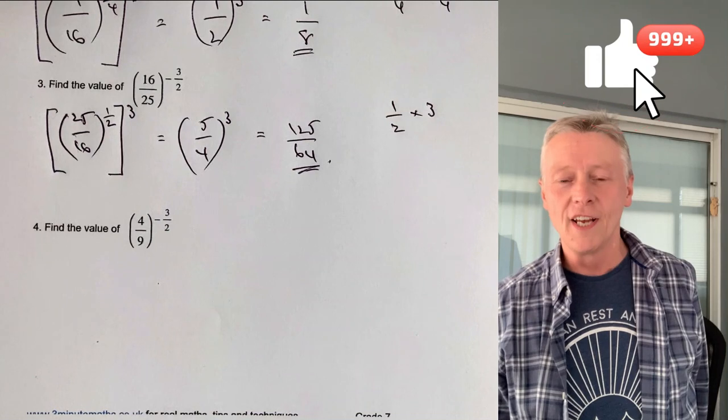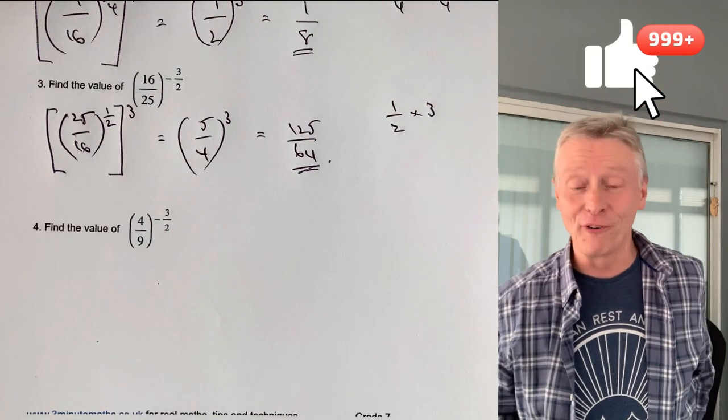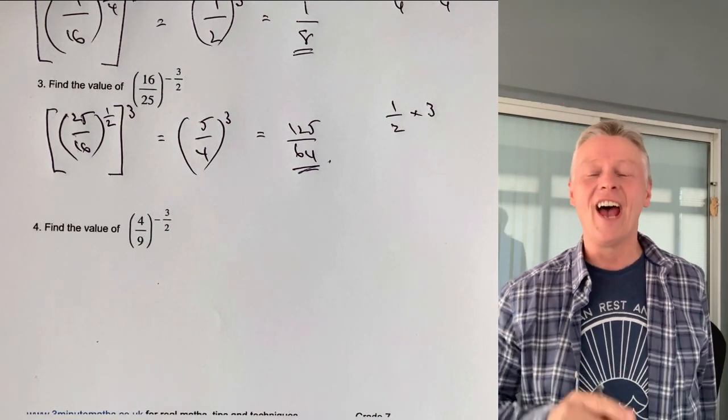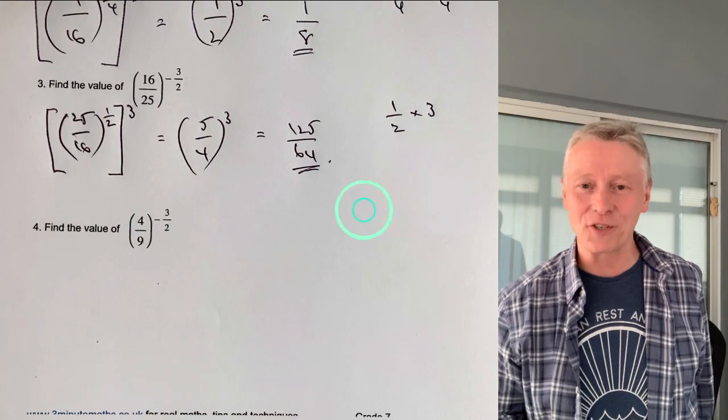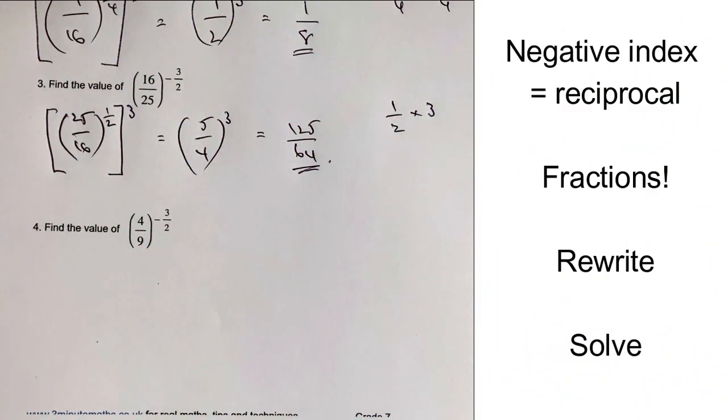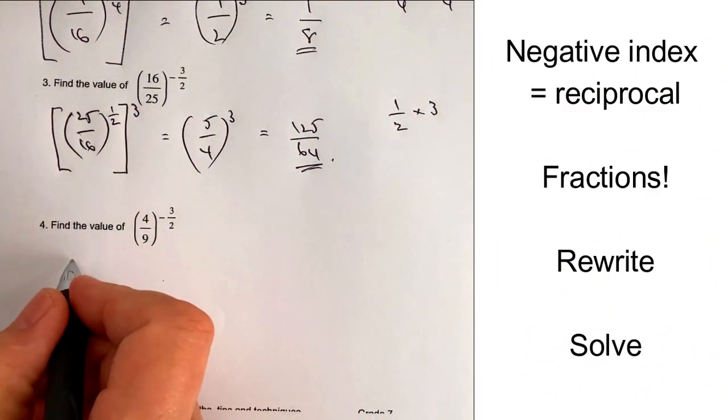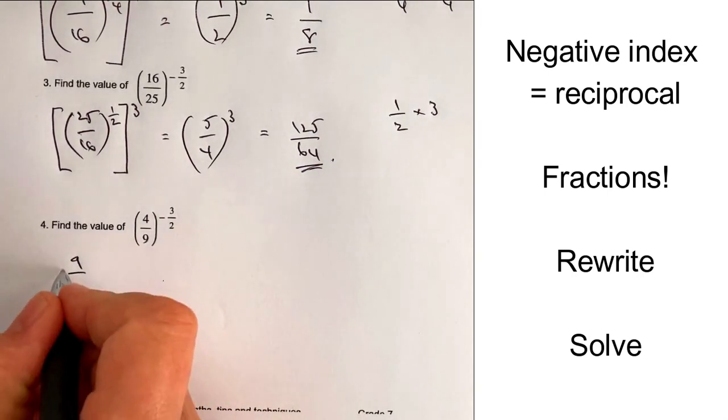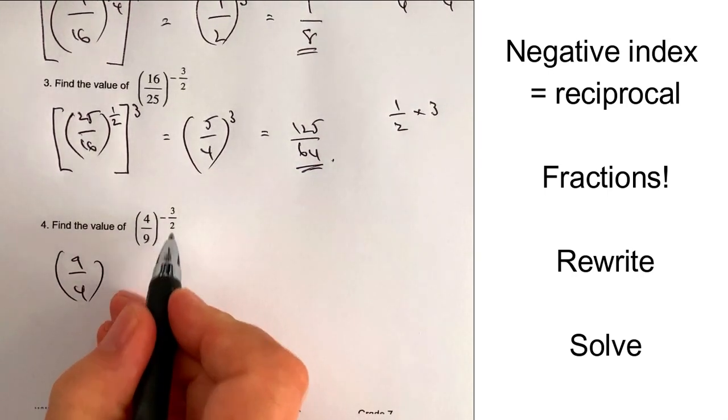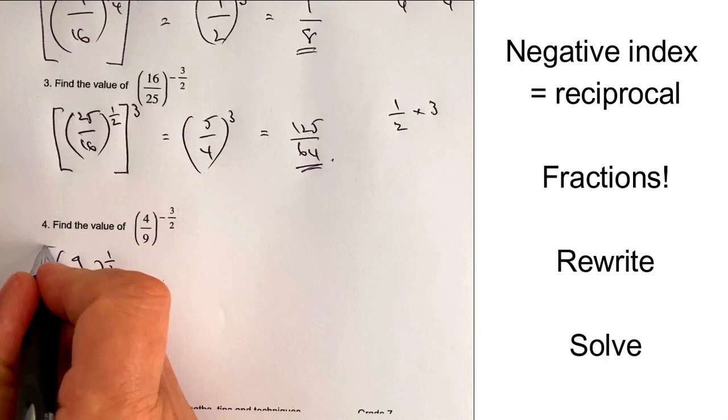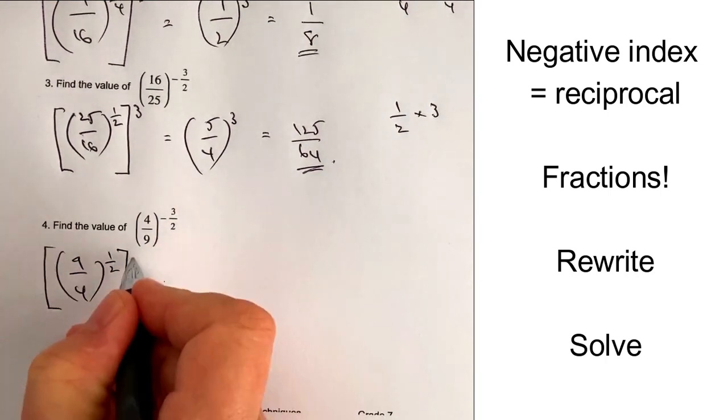So the final one is question number 4. Please do stop the video and have a go at that particular question, see how you get on. Okay, let's have a quick look at that one. So I've got 9 over 4, again it's 3 over 2, so that's fine to the power of a half and then cubed at the end.